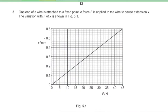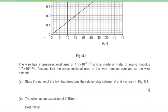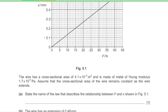Question 5: a wire of cross-sectional area 4.1 × 10⁻⁷ m² and Young modulus 1.7 × 10¹¹ Pa has force F applied causing extension x. Part A: state the law describing the F–x relationship in figure 5.1. The graph shows a straight line through the origin, so force is directly proportional to extension — this is Hooke's Law.